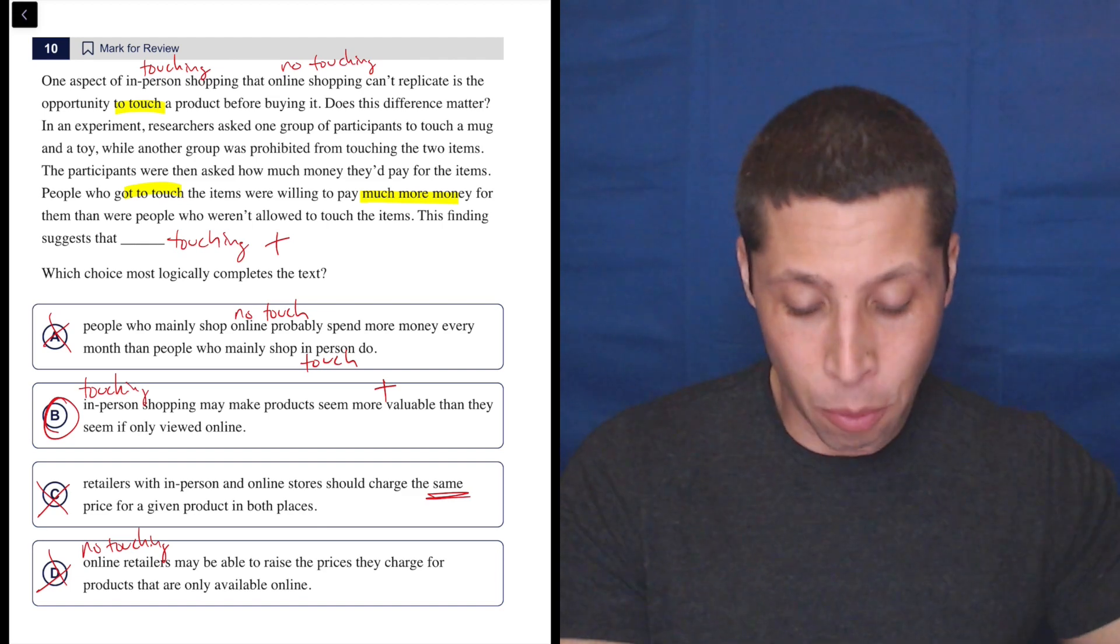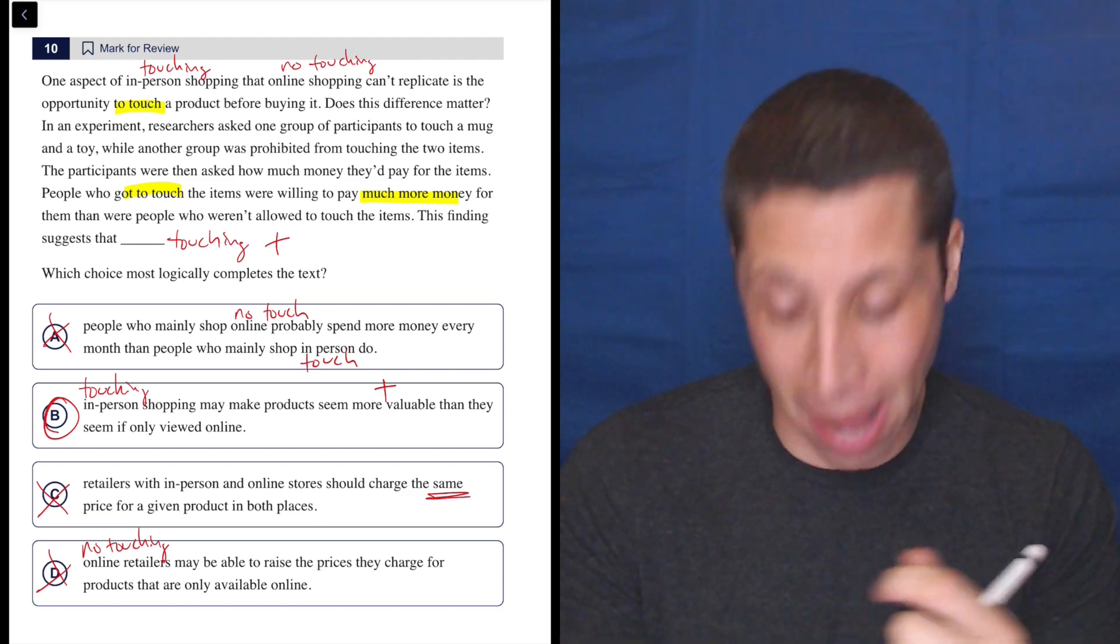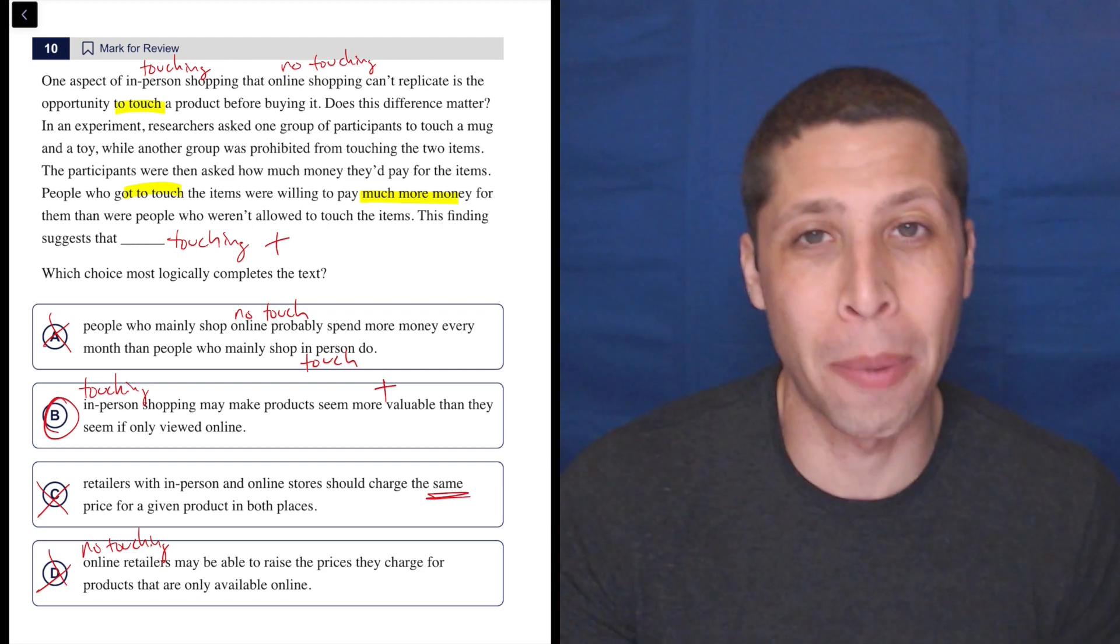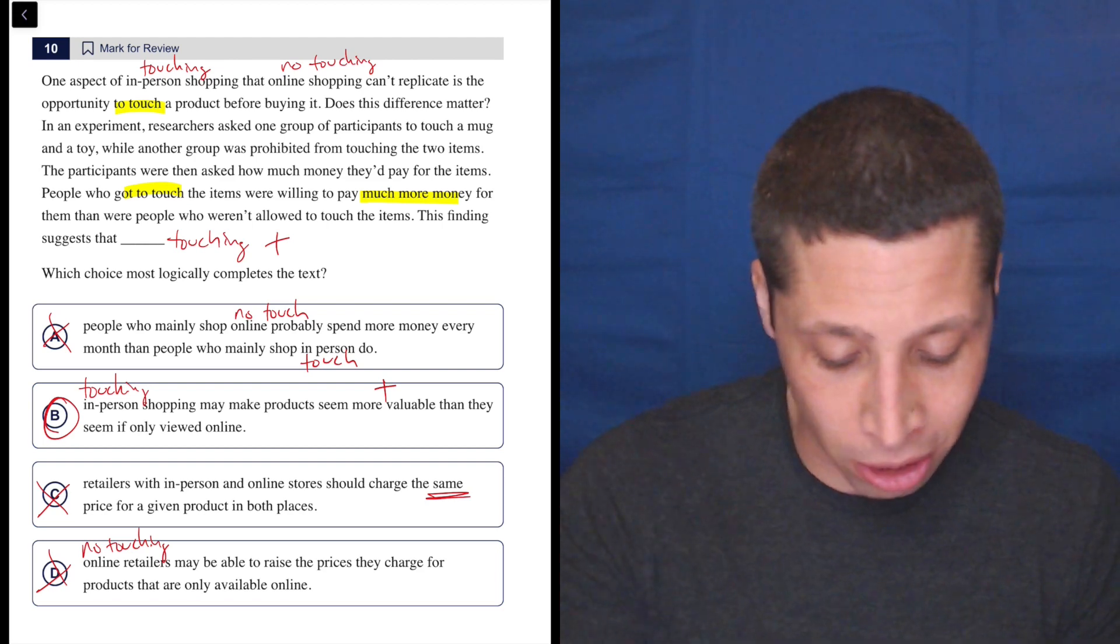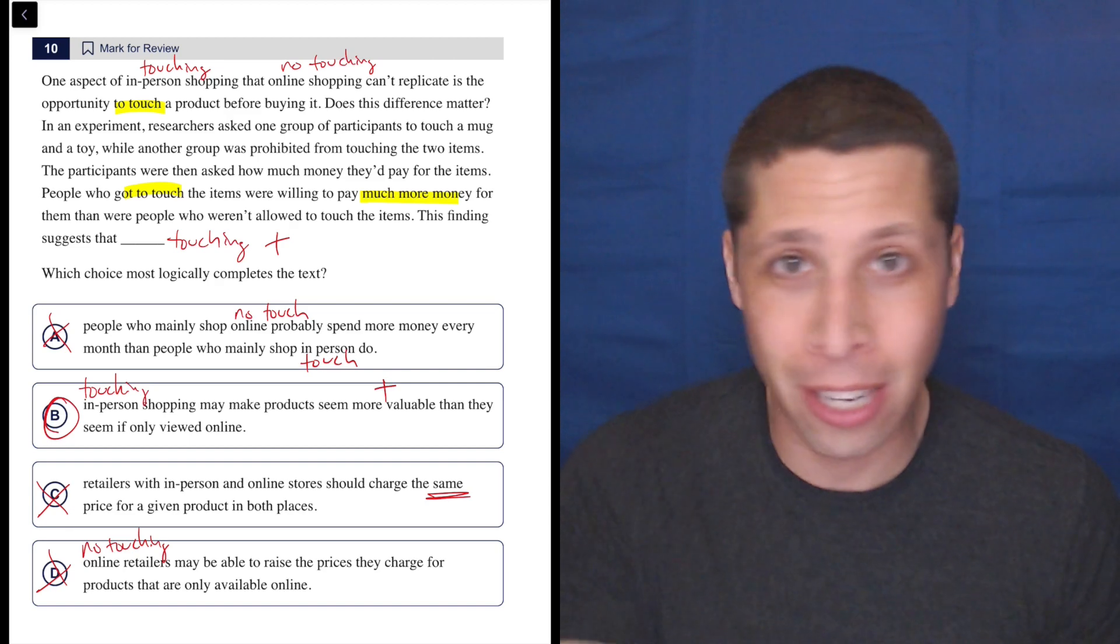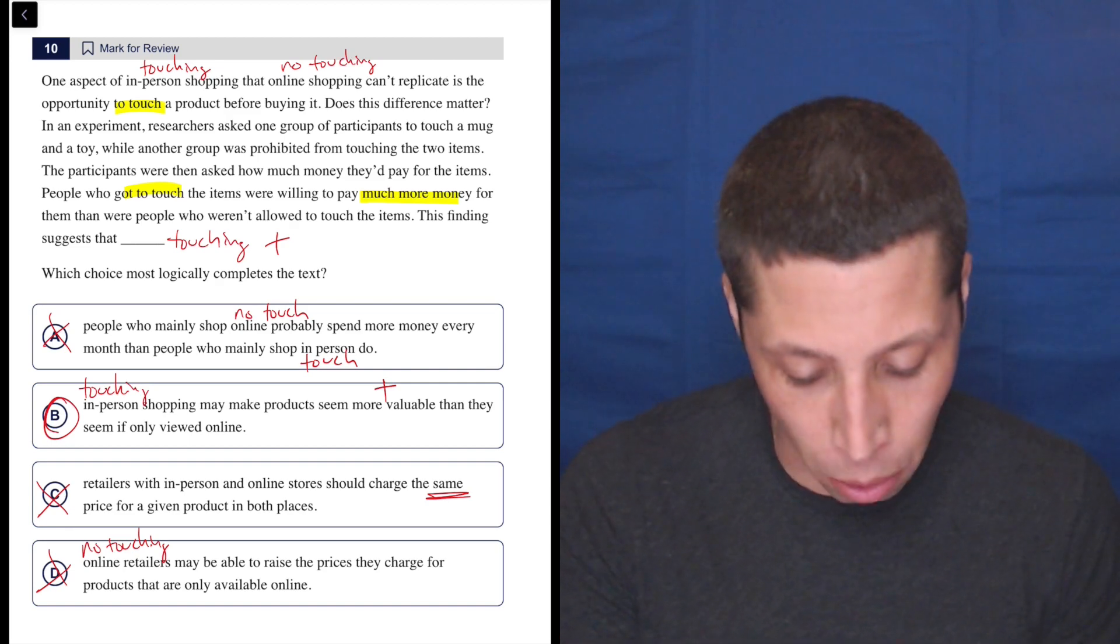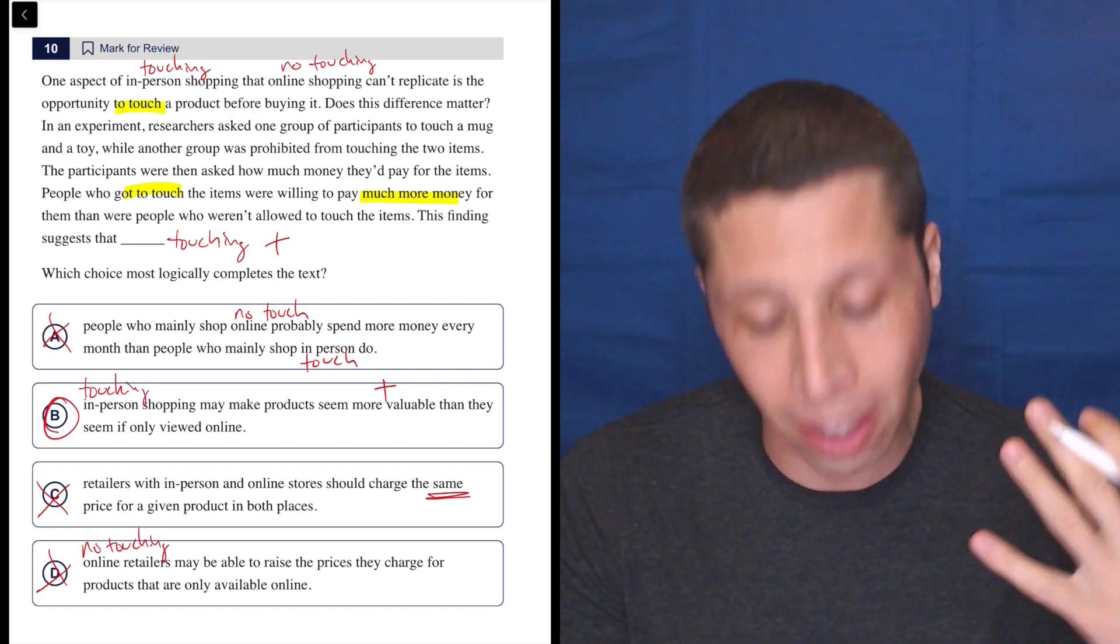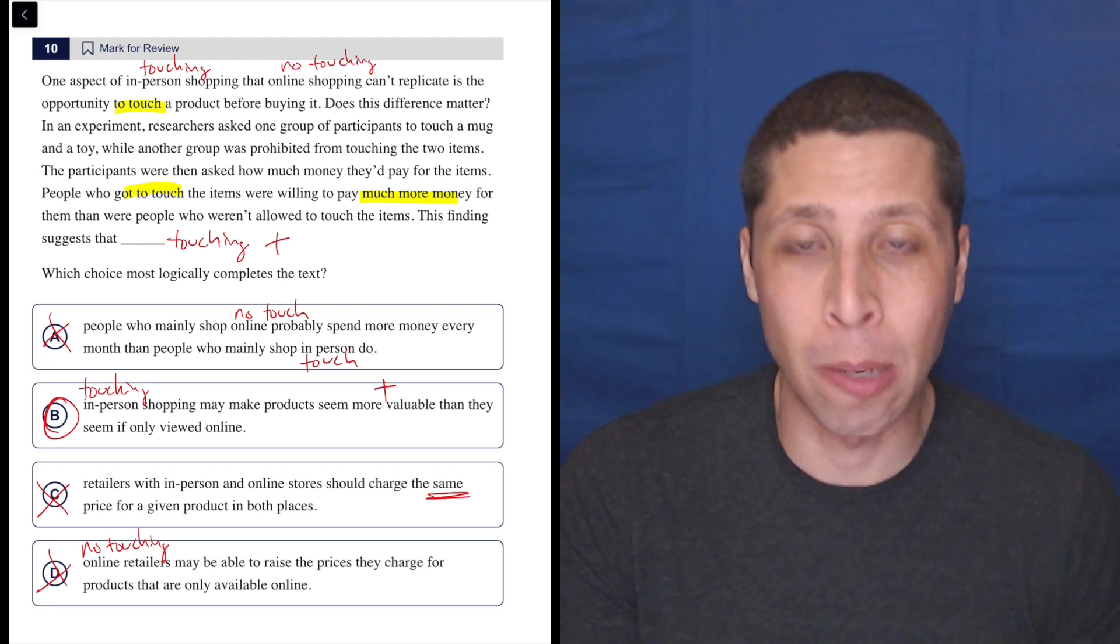B is proven right with very simple connections to our passage, right? That touching and in-person shopping are kind of the same thing. And so touching is good. So in-person shopping is good. It costs - you know, people are going to have more that they're going to spend, or at least they're going to perceive things as being more valuable than they really are.